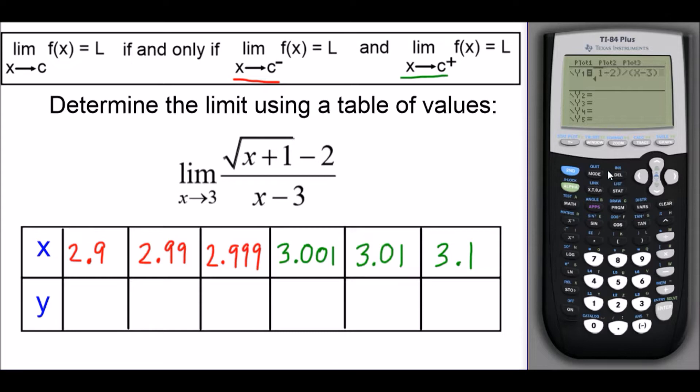If you go to the table of values, notice everything's counting by ones and there's an error at 3. What we're going to do instead is hit second window, scroll down, and put the independent variable on ask. What that does is it allows us to type in values of x manually.